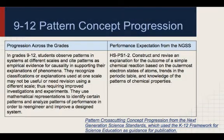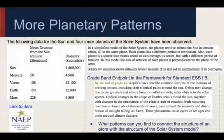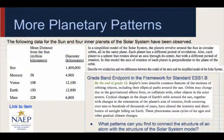One major change in the 9-12 pattern concept progression is that students must be able to support their explanations with evidence and that scale matters. High school science also incorporates more math. In a simplified model of the solar system, the planets revolve around the sun in circular orbits all in the same plane, each with a different period of revolution. Each planet is also a sphere that rotates about an axis through its center with a different period of rotation, and the axis of rotation of each planet is perpendicular to the plane of the orbit. Describe two similarities and two differences between this model of the atom and the simplified model of the solar system.